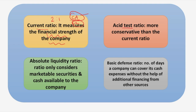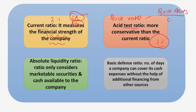Moving on to the acid test ratio, also known as the quick ratio. This ratio is more conservative than the current ratio because quick assets are computed by adjusting current assets to eliminate those assets which are not in cash form. Generally, 1:1 is the ideal ratio. The formula is quick assets divided by current liabilities. Quick assets are calculated as current assets minus inventory minus prepaid expenses.